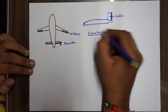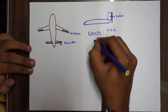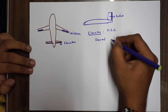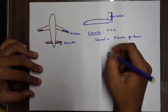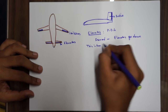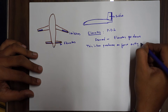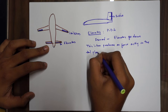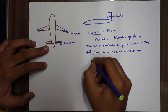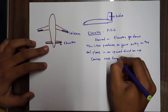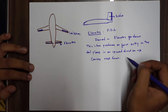Elevators give you pitch. If you move the control column forward, the elevators go down. This produces an aerodynamic force acting on the tail plane in an upward direction, which in turn causes a nose-down pitch. So moving the column forward: elevators go down, force on tail plane upward, nose goes down.